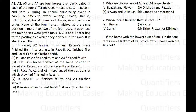Let us discuss this right now. In this set, information is given regarding four horse races in which horses a1, a2, a3, and a4 participated. A different owner among Rizwan, Danish, Dilkhush, and Razak owns each horse in no particular order, and none of the four horses finished at the same position in more than two of the four races.